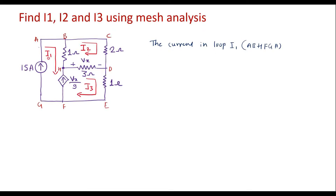Here we can see that there is a current source of 15 amps. Therefore, directly we can say that I1 is equal to 15 amps, because it contains purely a current source. Therefore, the current through this loop is 15 amps.